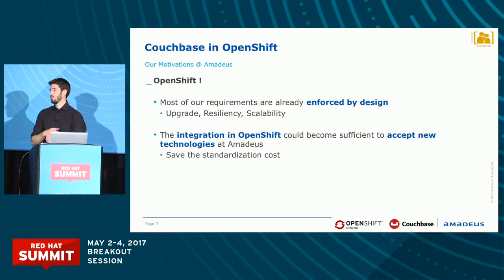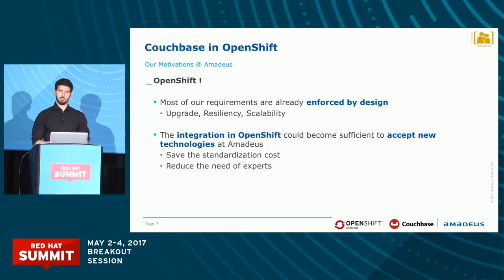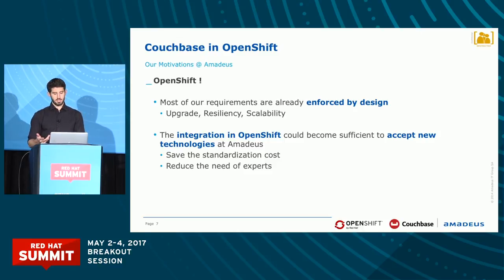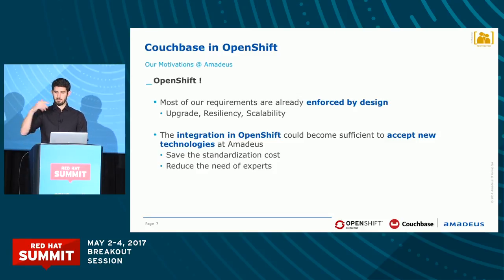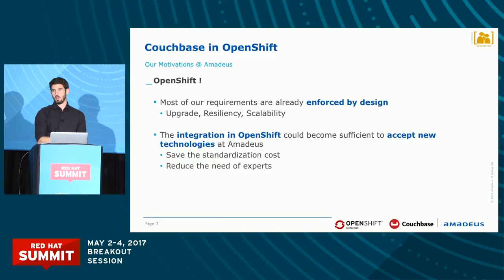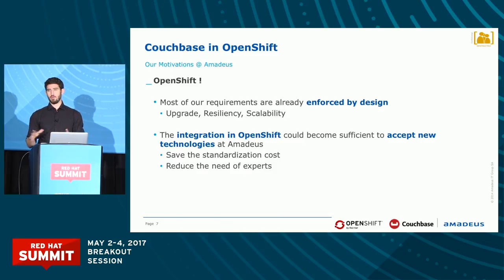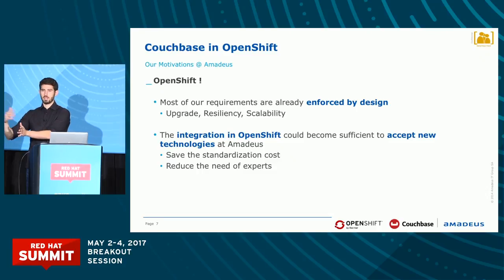The advantage is that it saves us the standardization costs — the 400 man-days I talked about. Also, it reduces the need for experts. If today you have five different data stores in your data center, you need at least 10 experts — two per data store, you have the main point of contact and the backup. If tomorrow you can manage your data stores through OpenShift, you just need one guy who knows OpenShift for all the basic stuff, and then one expert per data store only for hard problems. Also, the maintenance of all these scripts and automation would now be done by the data store vendors themselves.